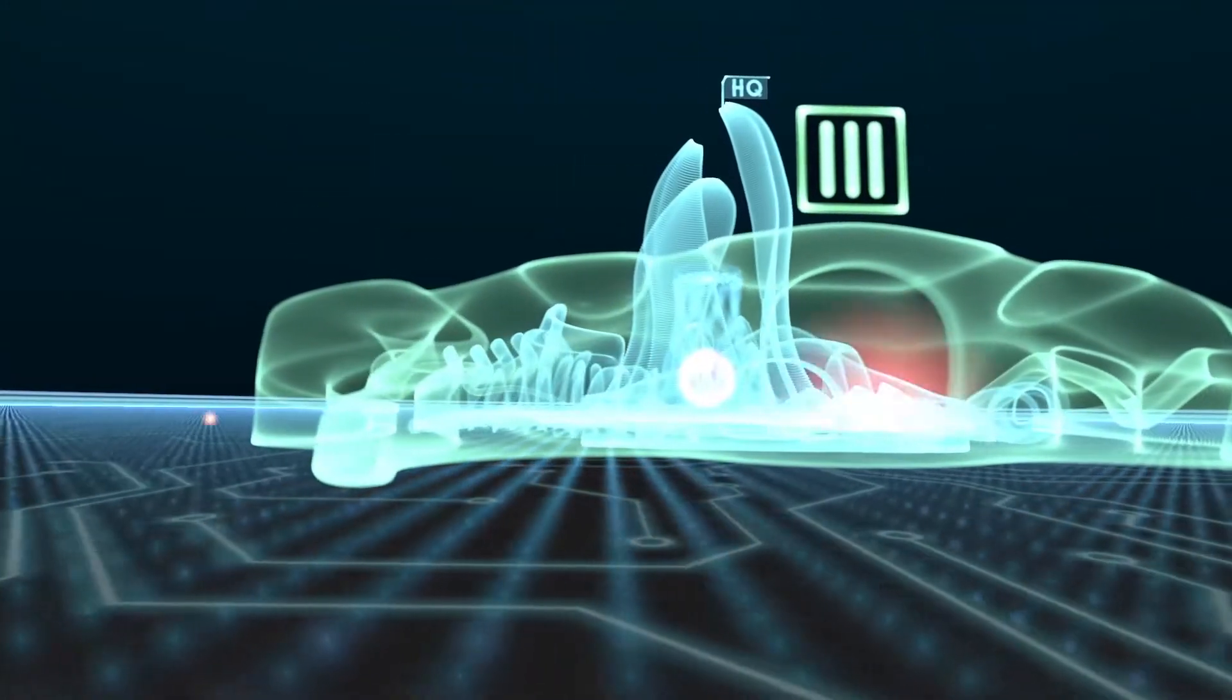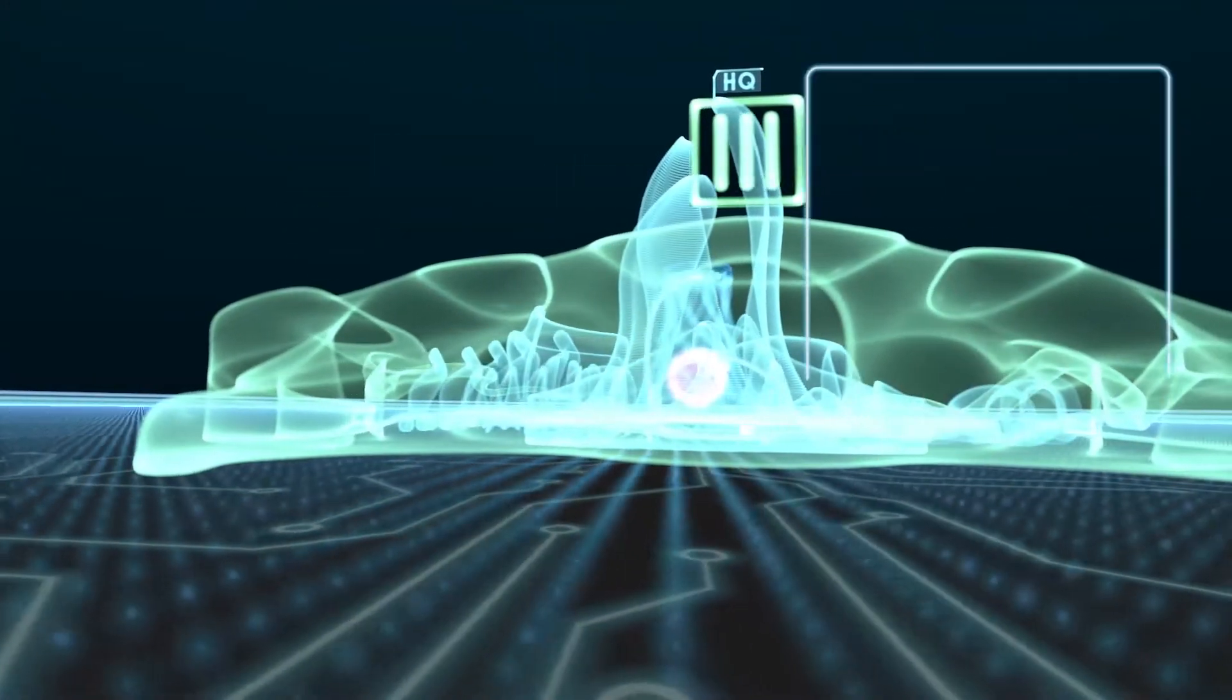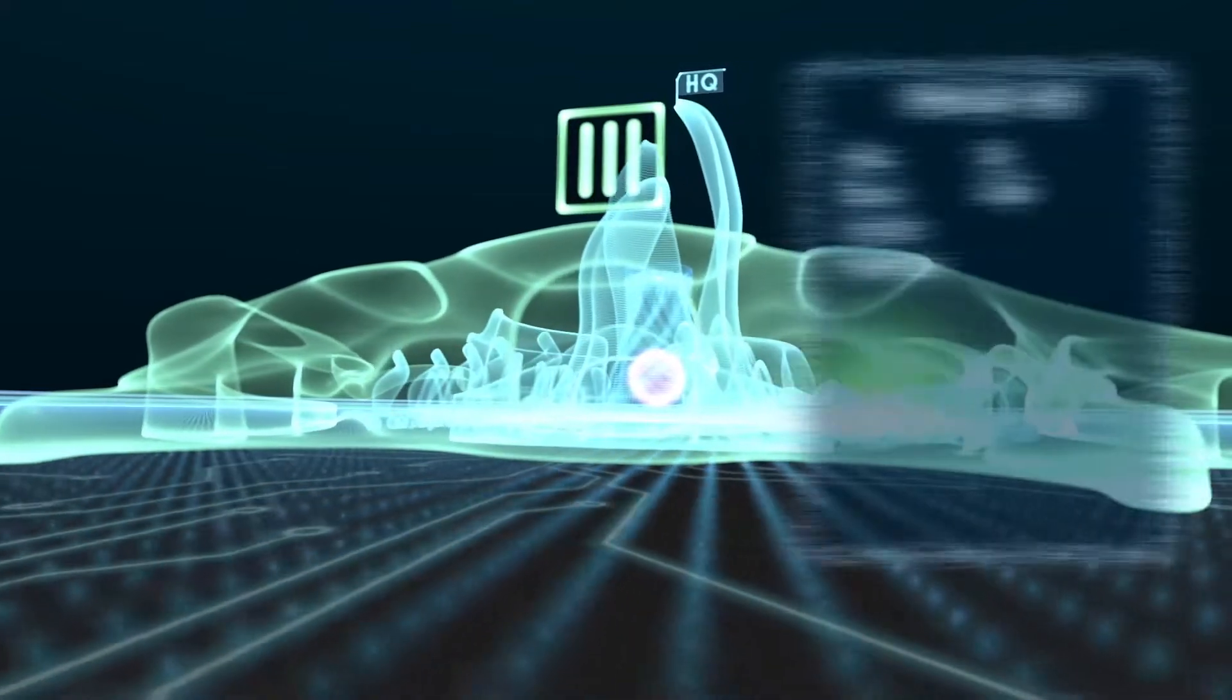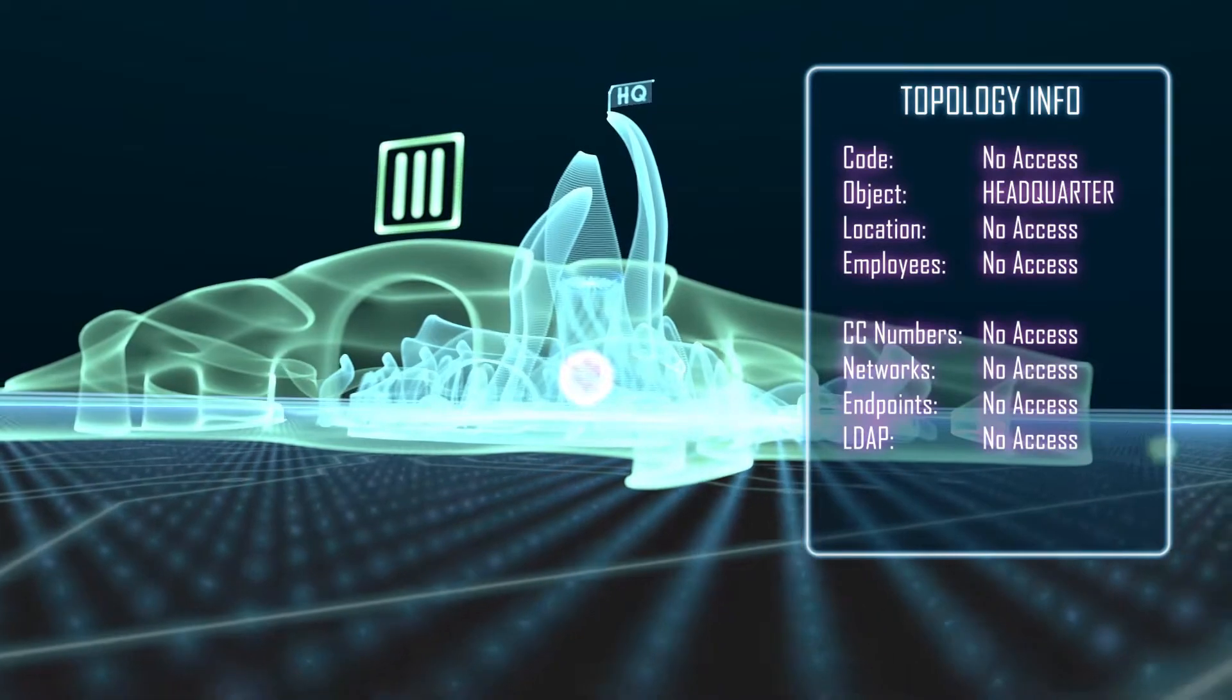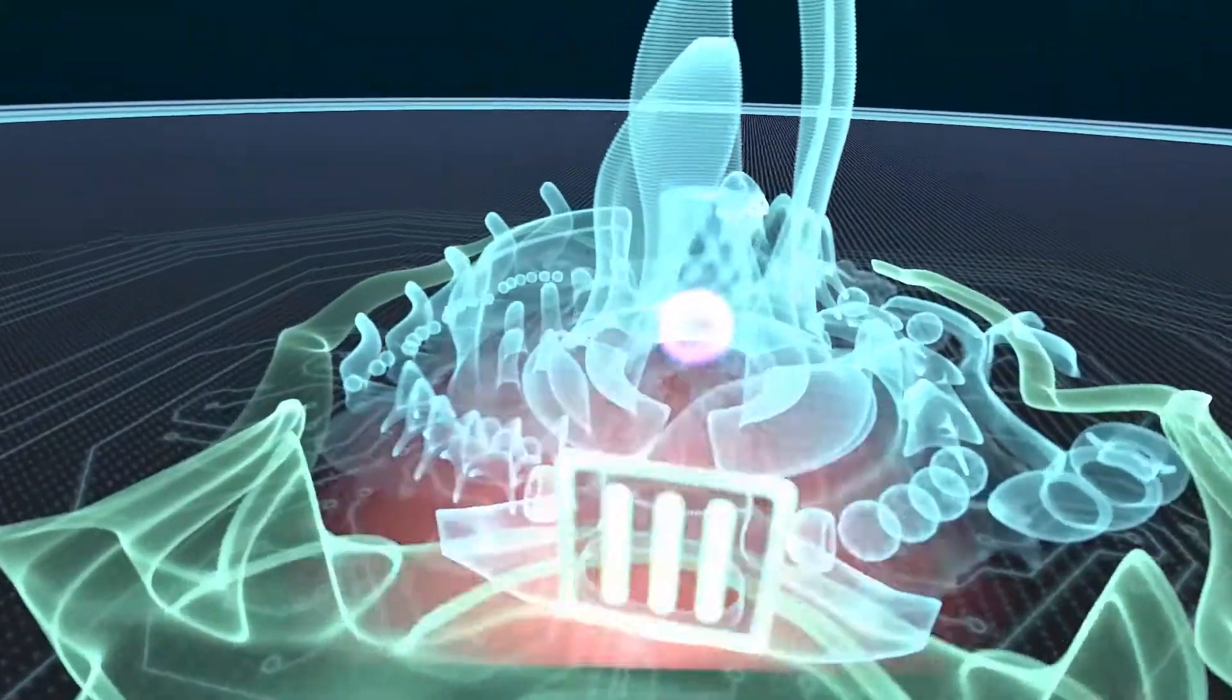The FortiGate Next Generation Firewall is the first and basic layer of security fabric defense against adversaries, leveraging AI-based FortiGuard security services and updating continuously to provide the best coverage.